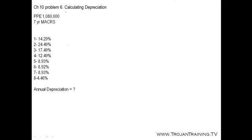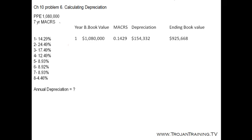So we have the original cost, we have 7 years as the useful life, and the depreciation rates are given. For the first year we take the original book value and use the depreciation rate for the first year, which is 14.29%, and we calculate the depreciation amount for the first year which is $154,332, and then we deduct that from the original book value.